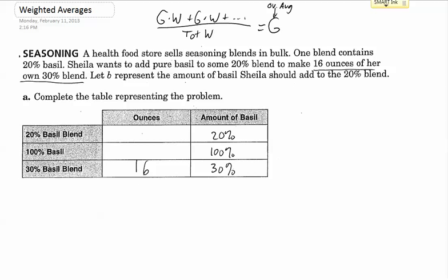So it says that she's making 16 ounces of her own 30% blend. So here's the 30% blend. I want 16 ounces of that. And then it says let B represent the amount of basil Sheila should add to the 20%. So this is, what is she adding? Well, it says that she's going to add pure basil. That's the 100% basil. That means it's all basil. It's pure. Alright, so we're going to say that that is B. B is the amount of pure basil Sheila's going to add.